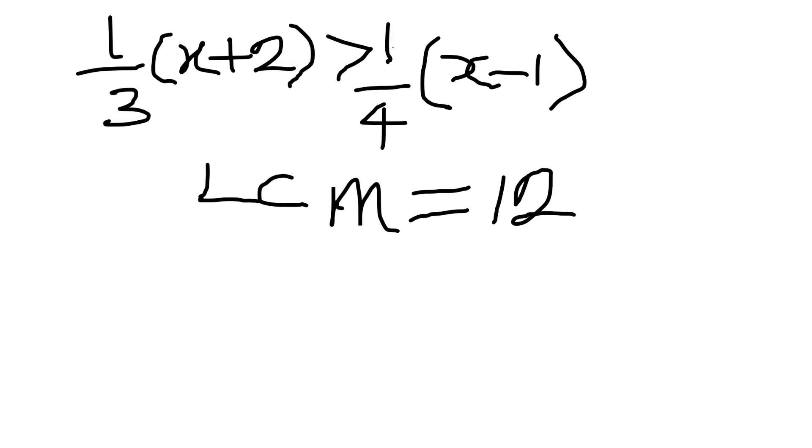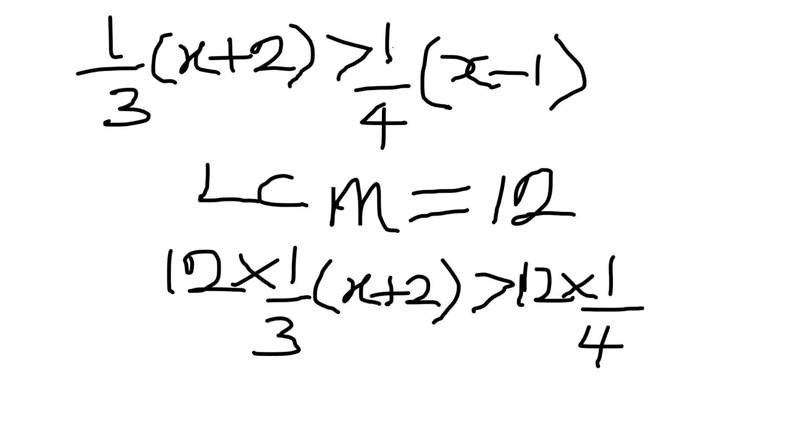So as we've gotten our LCM, we have to multiply both sides of the equation by the LCM. So we're going to have 12 times 1 out of 3, multiplying x plus 2, greater than 12 times 1 out of 4, multiplying x minus 1.